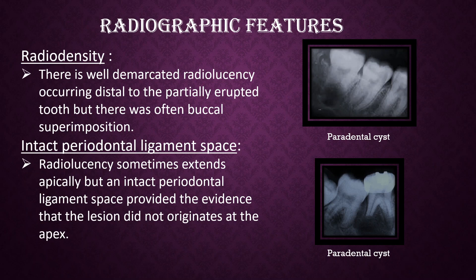Radiographic Features. There is well-demarcated radiolucency occurring distal to the partially erupted tooth, but there is often buccal superimposition. The radiolucency sometimes extends apically, but an intact periodontal ligament space provides evidence that the lesion did not originate from the apex.